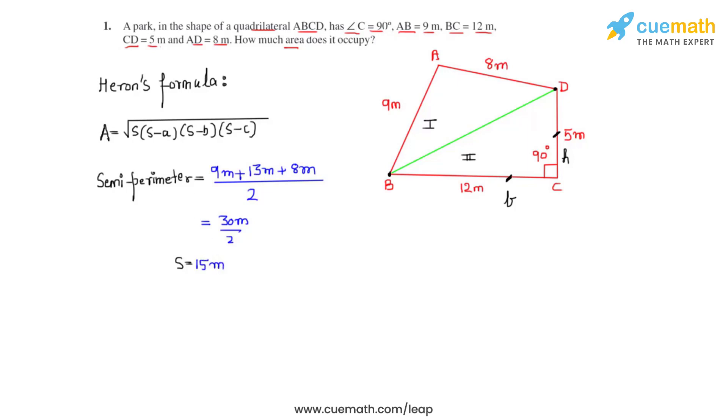Now that we have found the value of the semi-perimeter, we can substitute these values back into Heron's formula and can find the area of triangle ABD as √[15 × (15-9) × (15-13) × (15-8)].